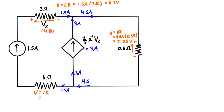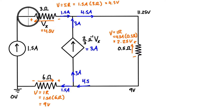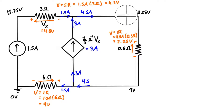The 4.5 amps of current comes all the way around and enters the next junction, where 3 amps go up through the dependent source branch and 1.5 amps go through the independent source branch. The voltage drop across the 6-ohm resistor is V = IR = 1.5 amps × 6 ohms = 9 volts. Grounding the circuit at the bottom node, when we cross the 6-ohm resistor we jump up 9 volts, then crossing the 0.5-ohm resistor adds another 2.25 volts, giving us a node voltage of 11.25 volts.